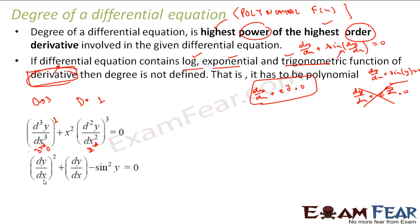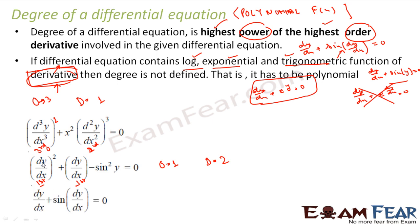Second example: (dy/dx) + sin²y = 0. Both terms involve dy/dx, so the maximum order is 1, and order is 1. For degree, there is a trigonometric function (sin), but it is sin y — not sin(dy/dx). That means degree is defined. The highest power of the highest order term (dy/dx) is 2, so degree is 2.